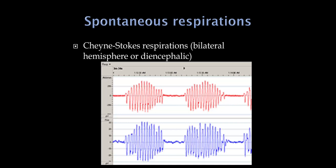We also want to observe the patient's breathing pattern, which can help suggest where the lesion might be. With bilateral hemispheric or bilateral diencephalic (thalamic) lesions, we may see Cheyne-Stokes respirations — not specific for structural brain lesions, but they can be seen. Cheyne-Stokes looks like this: the patient hyperventilates for a period, then has a period of apnea, then hyperventilates again. A very large MCA stroke with herniation to the other side of the brain could produce Cheyne-Stokes respirations.